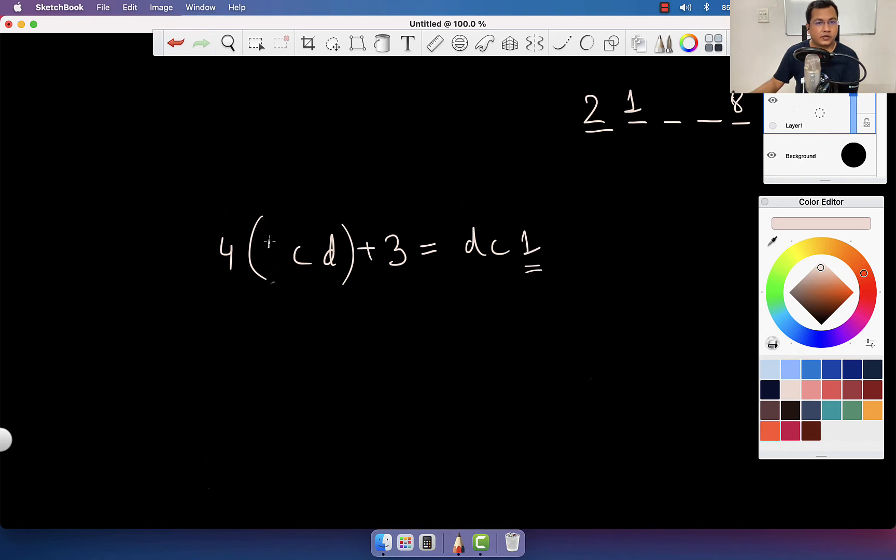So b is 1. This is 400 plus 4 times cd plus 3 equals dc1. Let me pause and think: d has to be more than 400 because 4 times 100 is 400, so d has to be more than 400.